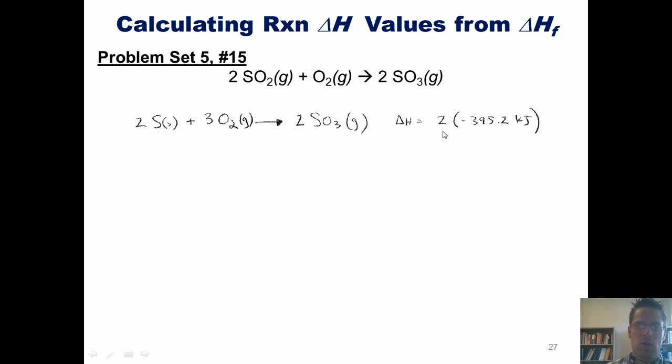The total delta H also has to be multiplied by 2. Now let's move to our next component, SO2. From Appendix C, we find this equation: solid sulfur and O2 gas combining to form SO2 with a delta H of negative 296.9. The SO2 in our target reaction has a 2 in front of it, hence we multiply this entire equation by 2 and the final delta H by 2.